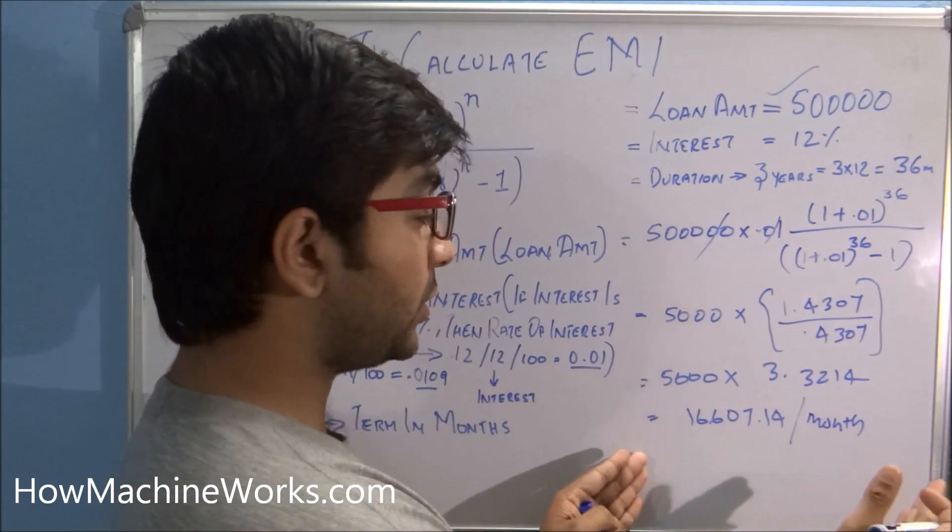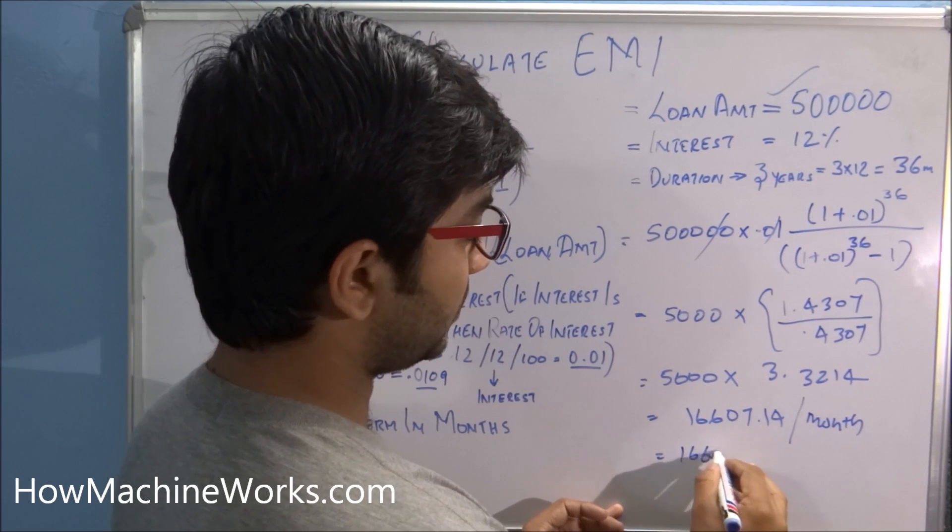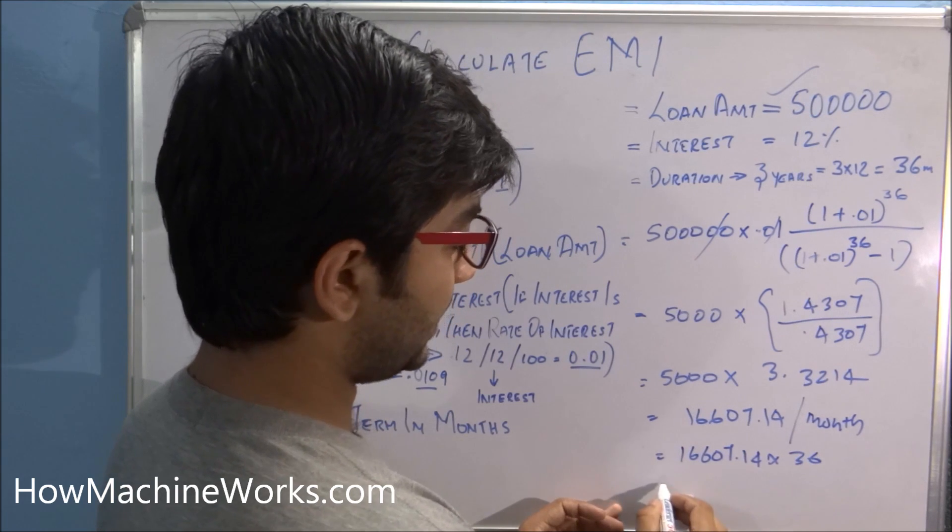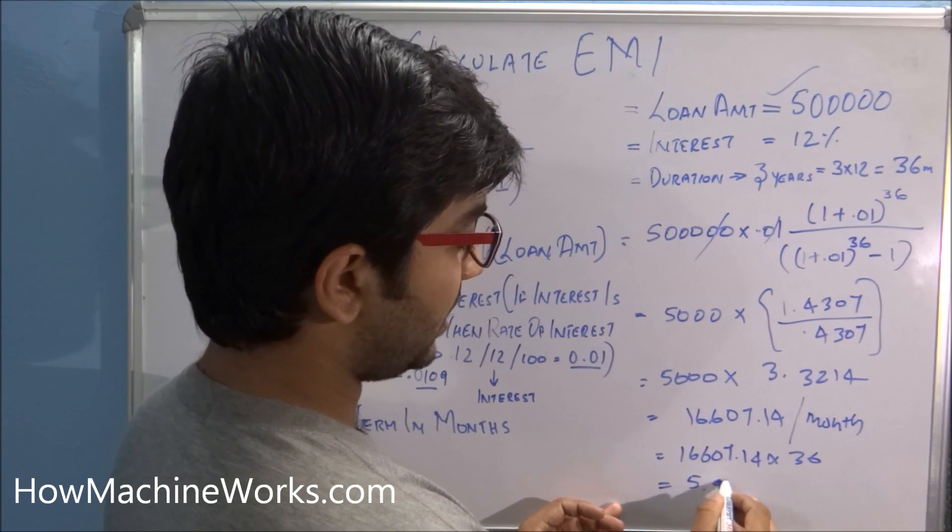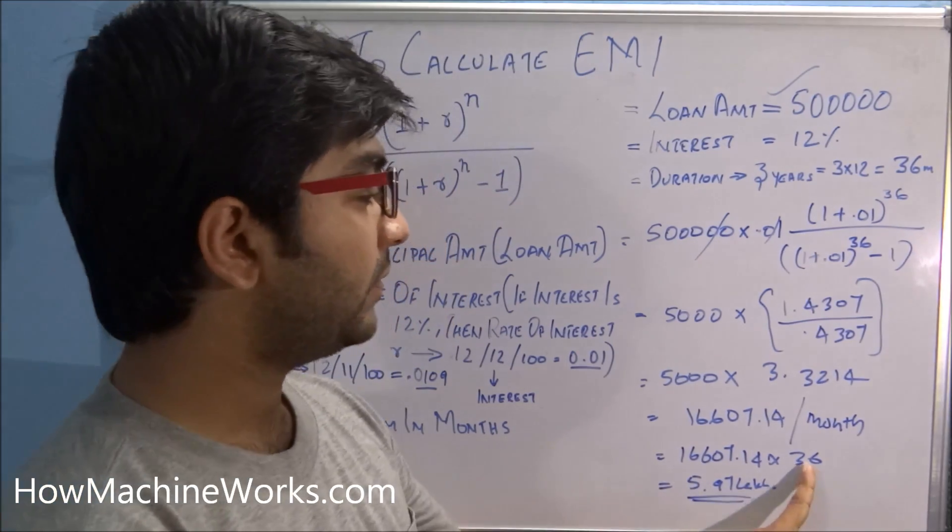That is 16,607.14 into 36, that is 36 months. That gives nearly 5.97 lakhs. That's the total amount you have to pay in 36 months.